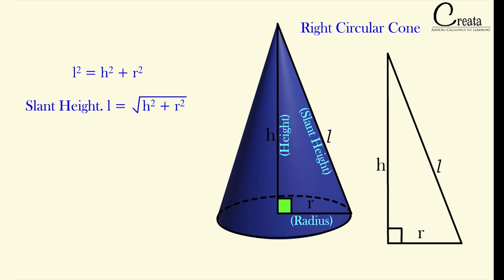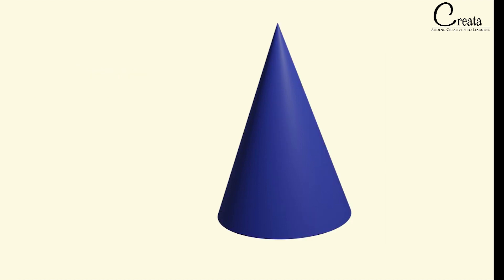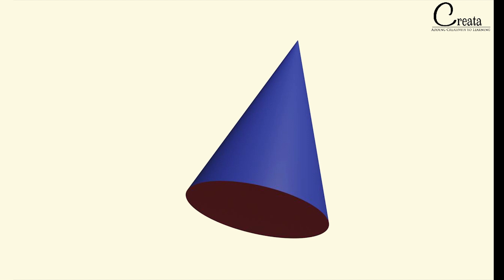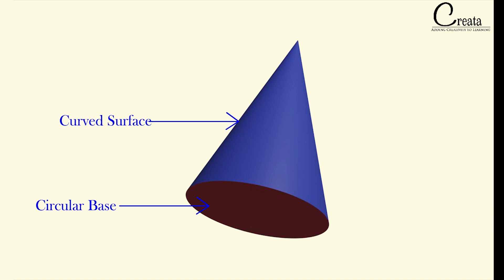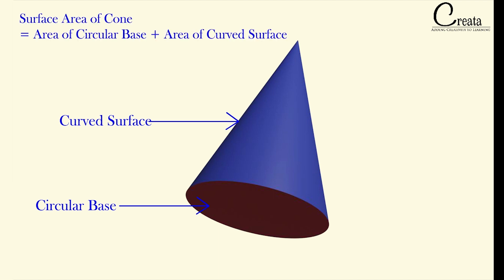Let's see the various components of a right circular cone. If you observe, this cone has two components: the first is the circular base and the second is the curved surface. So a right circular cone is composed of a curved surface and a circular base. Let's find the surface area of this cone. The surface area of the cone will be equal to the area of the base — that is π r² — plus the area of the curved portion. Finding the curved portion area is slightly tricky.